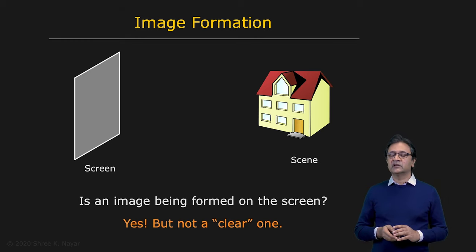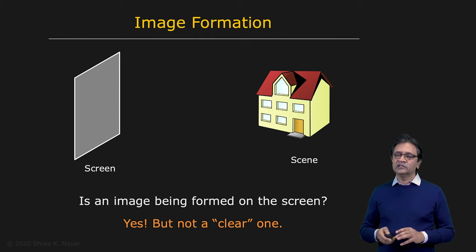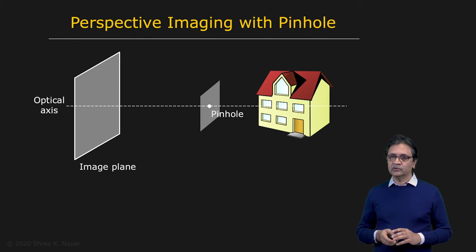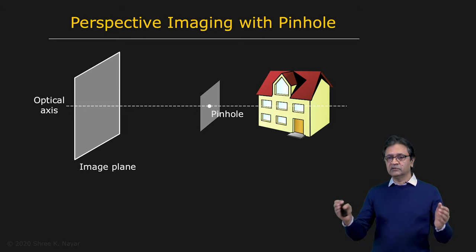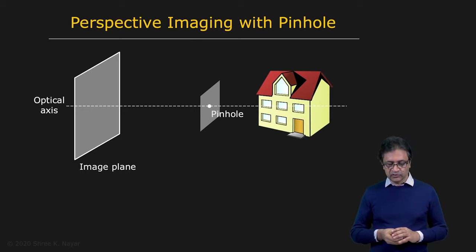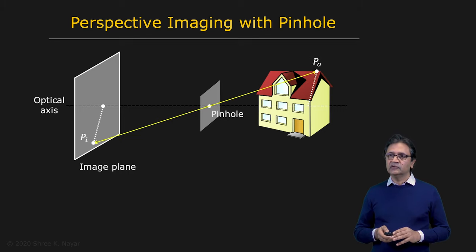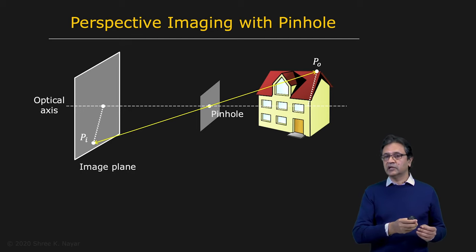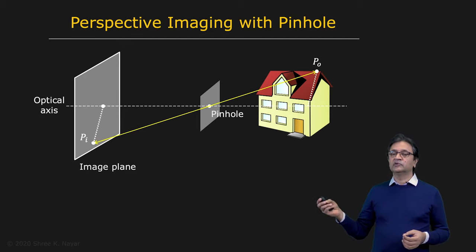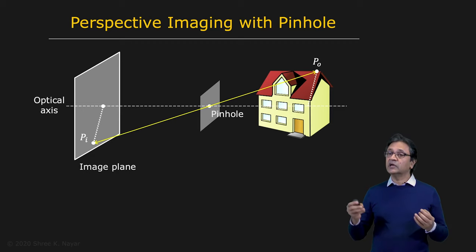So then the question is, how does one create a clear, crisp image of the house on the screen? The simplest way is by using a pinhole — an opaque sheet with a tiny hole in it, placed between the scene and the image plane. Now if you take a look at a single point on the house, there is a single ray that travels from that point, P0, to the image plane and projects onto the point PI. So every point of the scene now projects onto a single point in the image. We want to understand the relationship between P0 and PI.